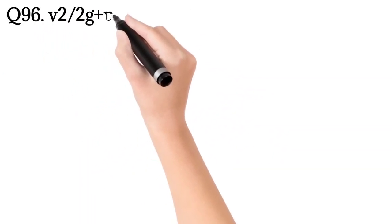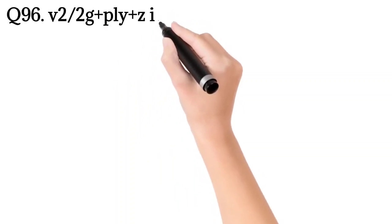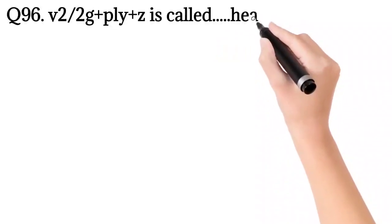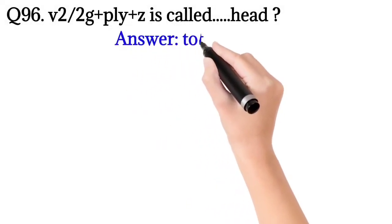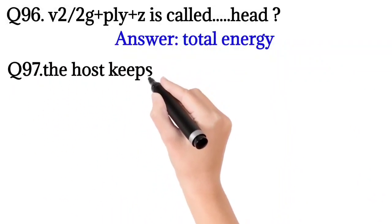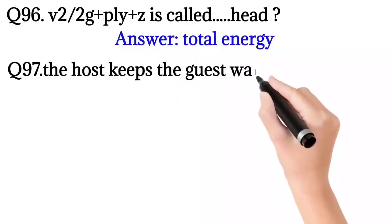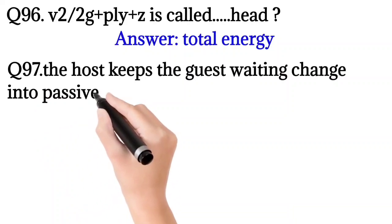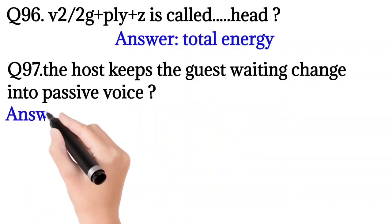Question number 96: V squared divided by 2g plus P/γ plus Z is called total energy head. Answer: total energy.